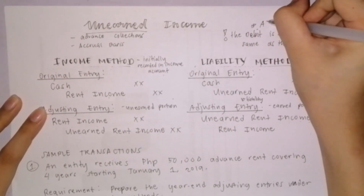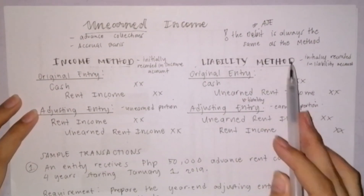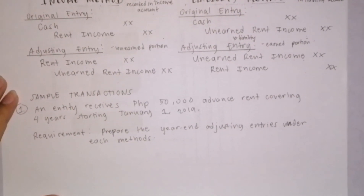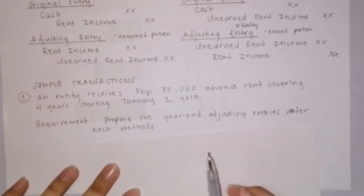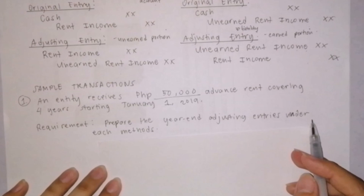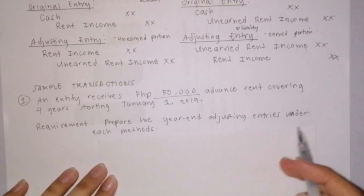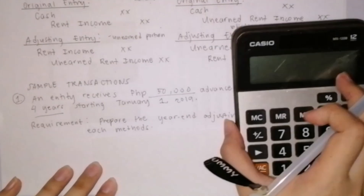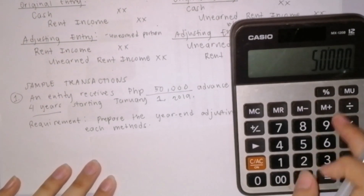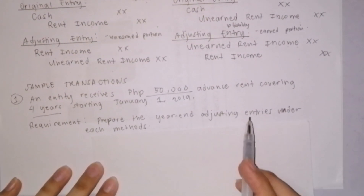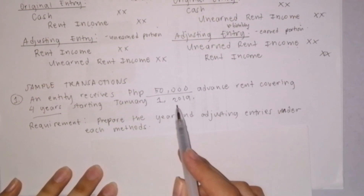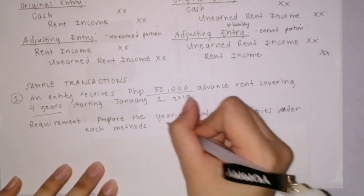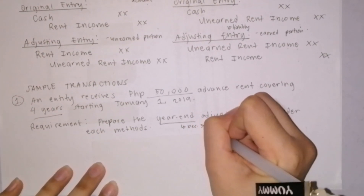To further understand the adjusting entries for unearned income, here is a sample transaction. An entity receives a 50,000 advance rent covering 4 years starting January 1, 2019. So, the 50,000 is for a 4-year period — meaning 50,000 divided by 4 years equals 12,500 rent per year. The requirement: prepare year-end adjusting entries under each method. The period that has elapsed is from January 1, 2019 up to year-end, December 31, 2019.